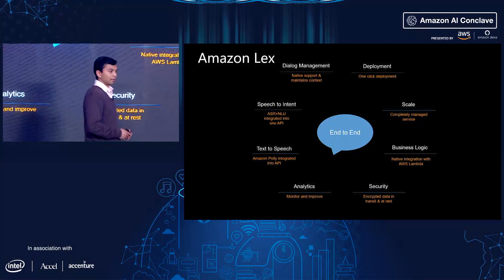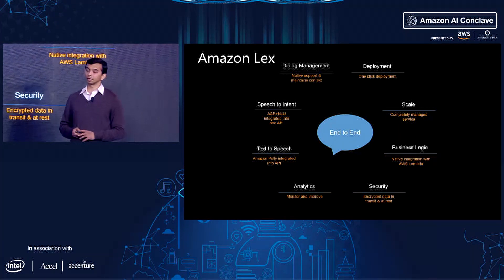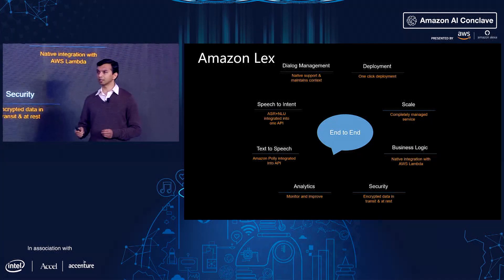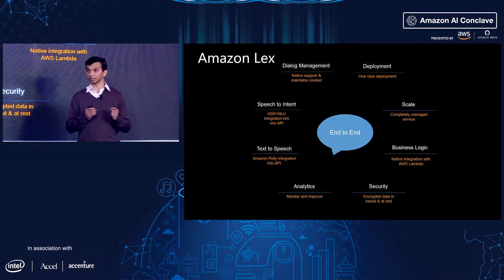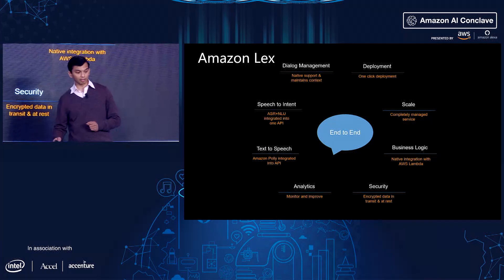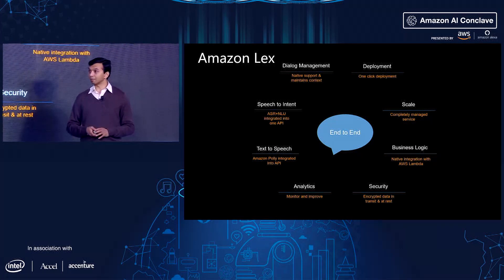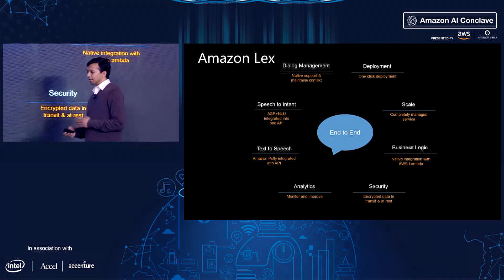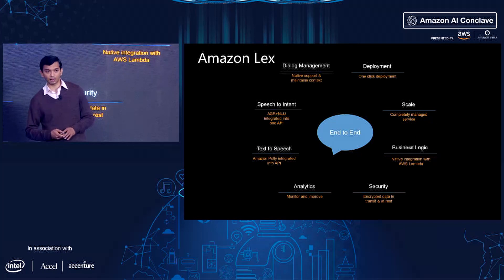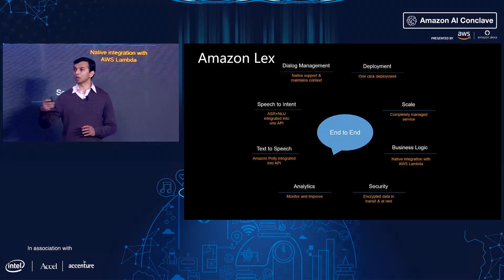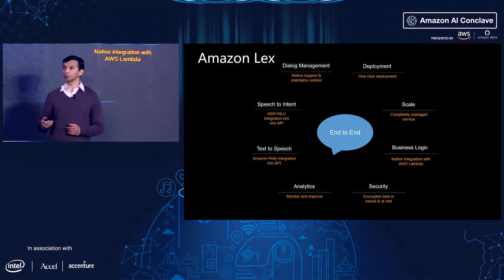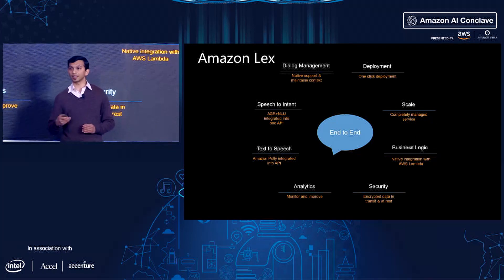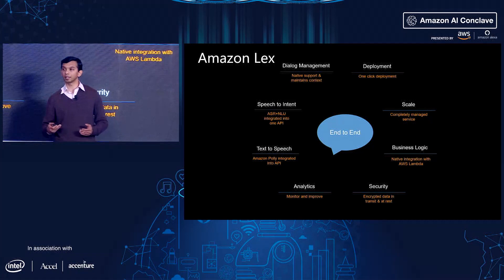With Lex you get a one-stop shop for all your conversational needs — right from speech recognition and natural language understanding, which we call speech-to-intent, because you go all the way from speech input to finally figuring out the intent. We also do text input. And then we have dialogue management where, for example, if someone says book a ticket to Chennai, you know they told you which city they want to travel to, so you don't ask for that again — you ask for the next piece of data you need, like the travel date.